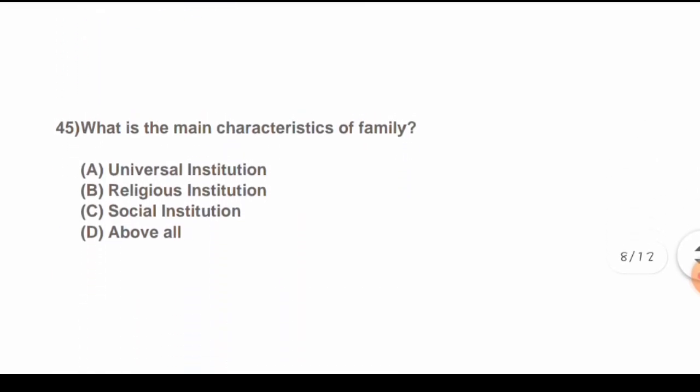Question 45: What are the main characteristics of family? Options are: A) Universal institution, B) Religious institution, C) Social institution, D) All of the above. The correct answer is D) All of the above.